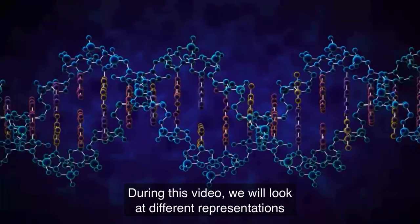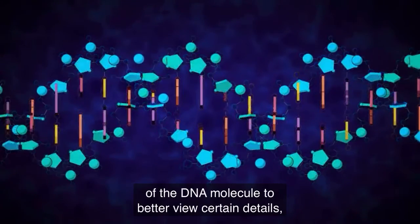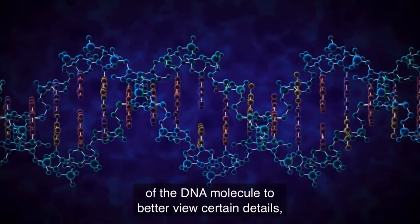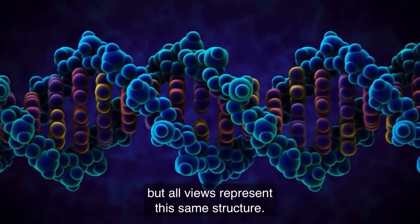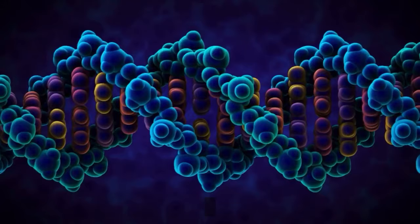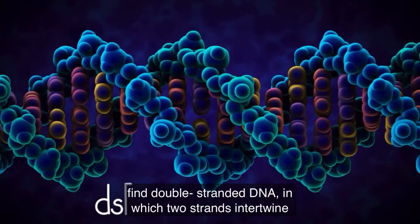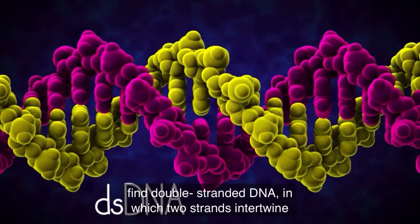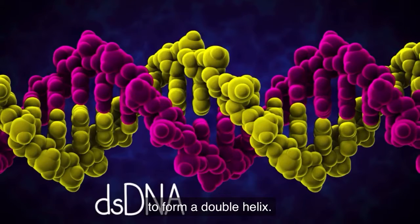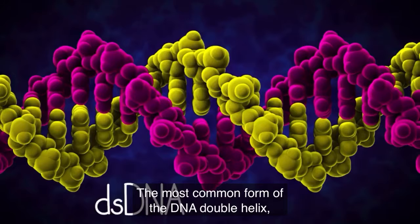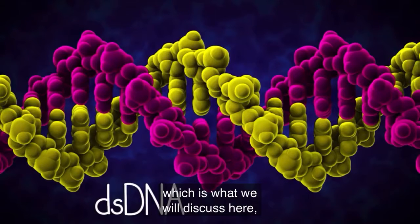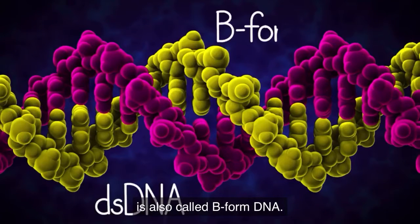During this video, we will look at different representations of the DNA molecule to better view certain details, but all views represent this same structure. Inside the cell, you will most commonly find double-stranded DNA, in which two strands intertwine to form a double helix. The most common form of the DNA double helix, which is what we will discuss here, is also called B-form DNA.